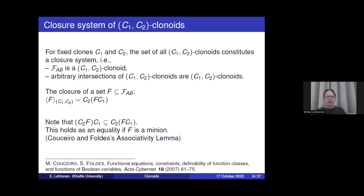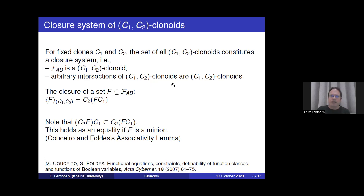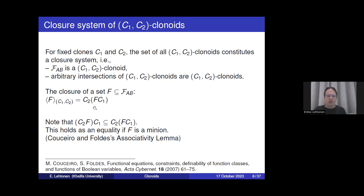What can we say about C1-C2 clonoids? First of all, the C1-C2 clonoids constitute a closure system — the set of all functions itself is a C1-C2 clonoid, and intersections of C1-C2 clonoids are again C1-C2 clonoids. Since we have a closure system, we have a closure operator, and the closure of a set F of functions can be described quite nicely: the least C1-C2 clonoid containing F is given by C2 composed with the composition of F and C1.